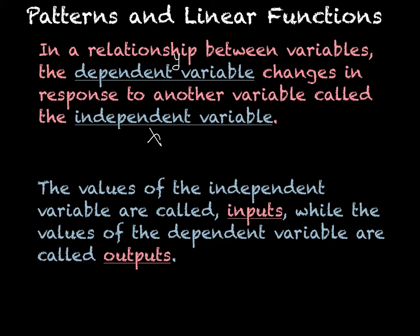The values of the independent variable are called input values or inputs, while the values of the dependent variable are the output. What that means is you put in a number — x — and then you do something to it and you get a number out, which is your y. So you put in an x and then you get out a y.